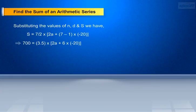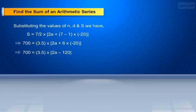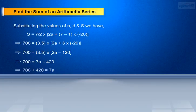This implies 700 equals 7a minus 420. This implies 700 plus 420 equals 7a. Therefore 7a equals 1120, and a equals 160.